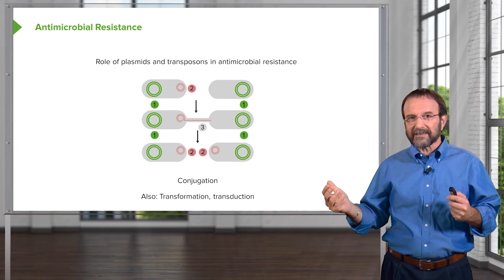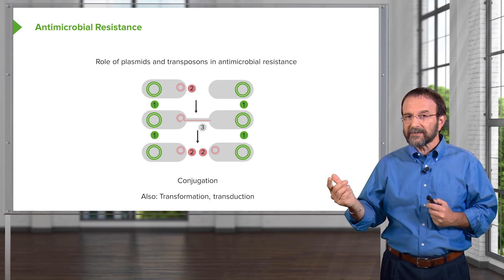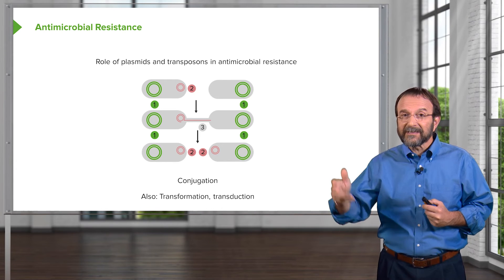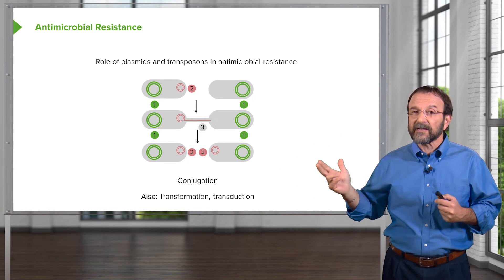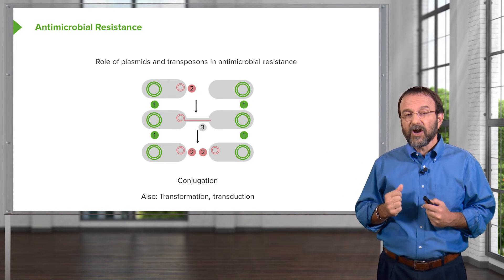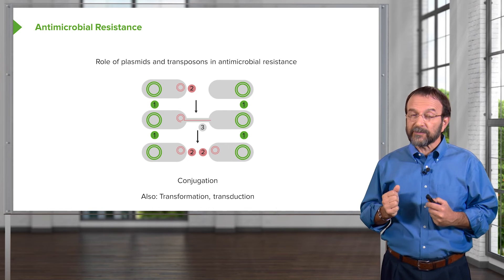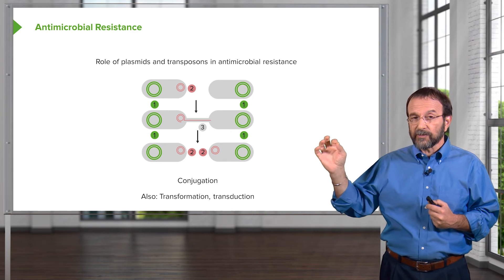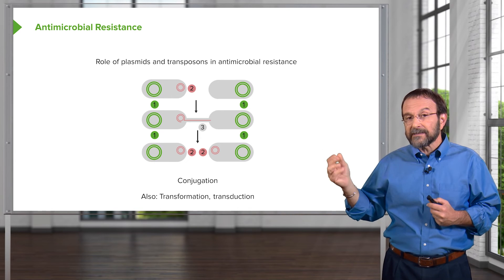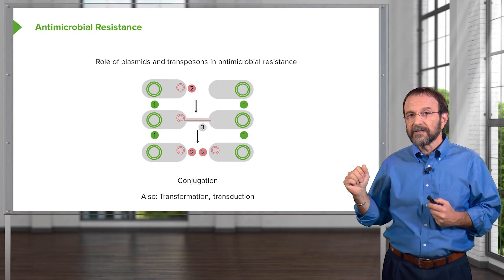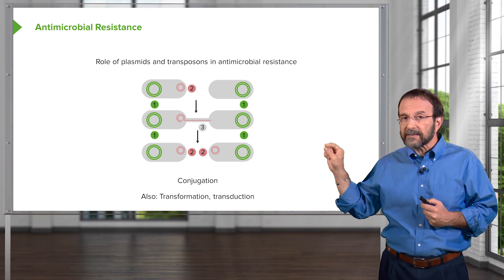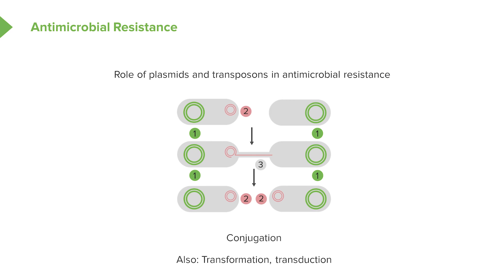Further complicating antibiotic resistance is that genes encoding resistance factors — for example, those encoding beta-lactamases — are often able to move from bacterium to bacterium. One way to do that is via plasmids, and many antibiotic resistance genes are encoded on plasmids. This diagram shows how plasmids can move from one bacterial cell to another: a bacterium with a chromosome and a smaller plasmid encoding a beta-lactamase transfers that plasmid to a second cell through a pilus, so the second cell acquires antibiotic resistance.